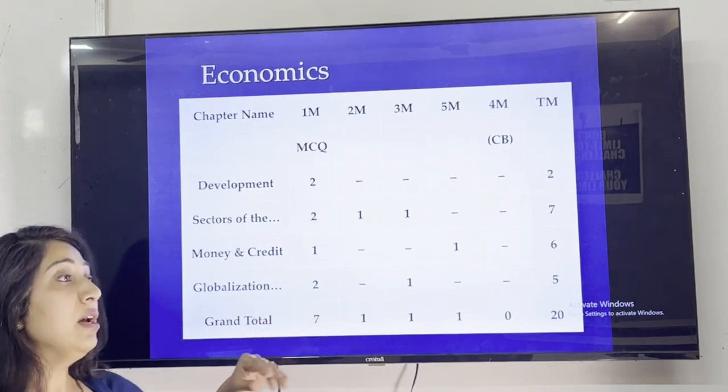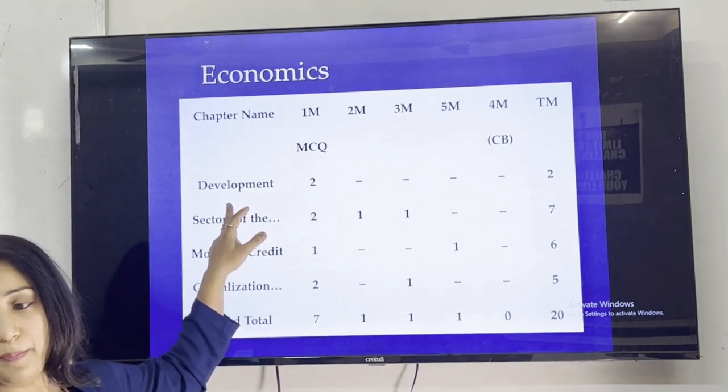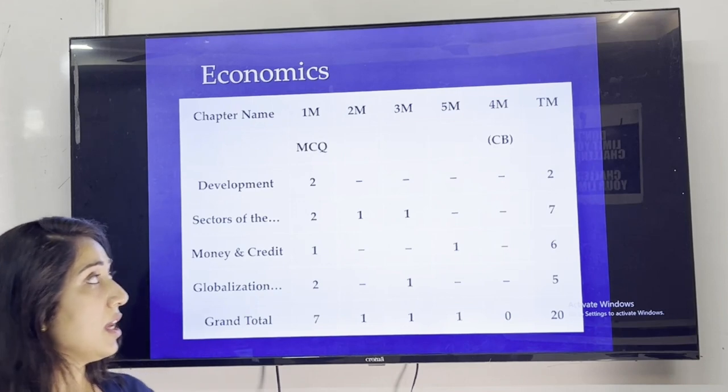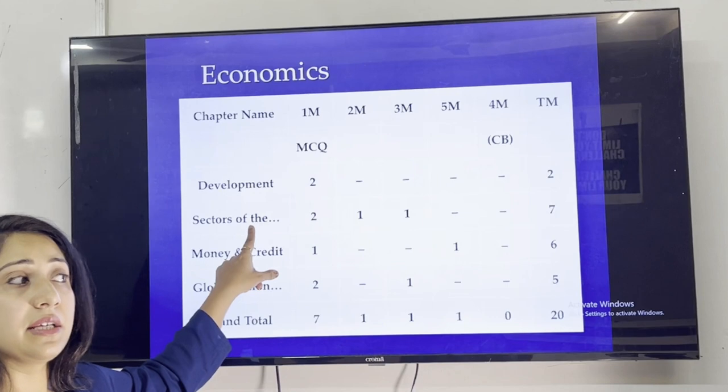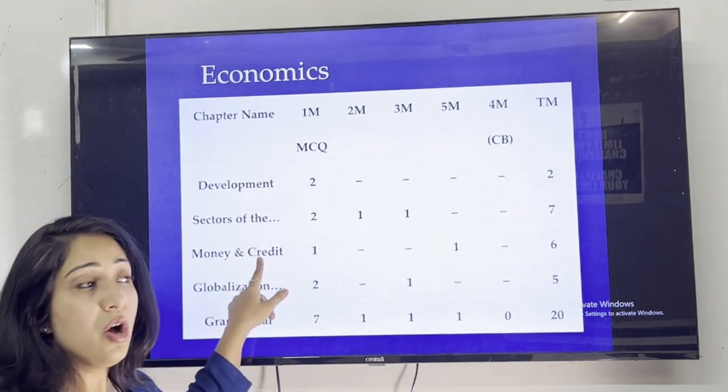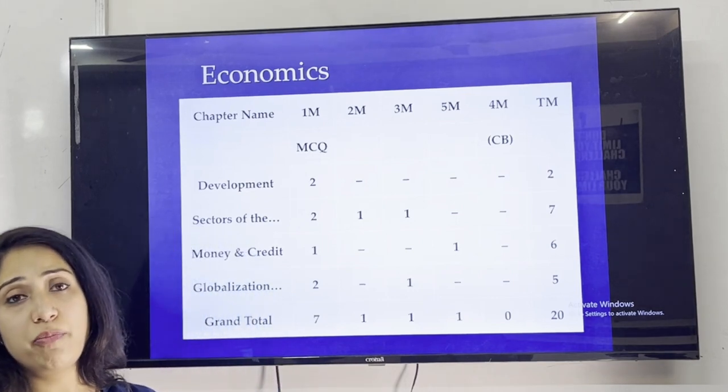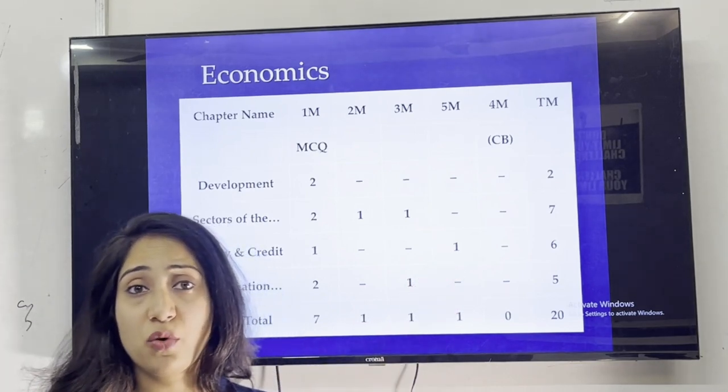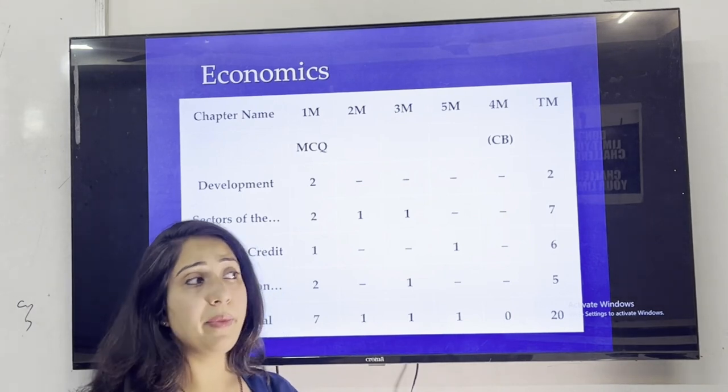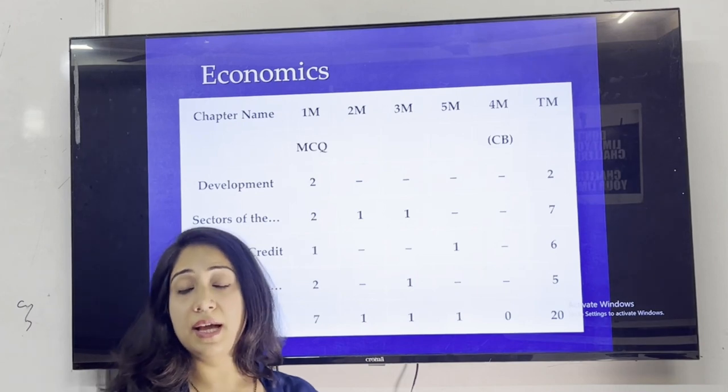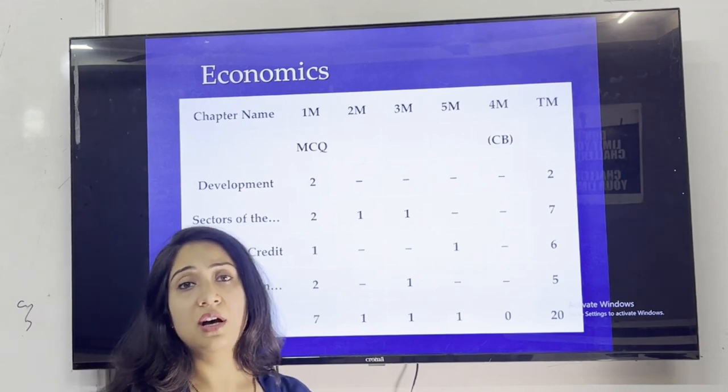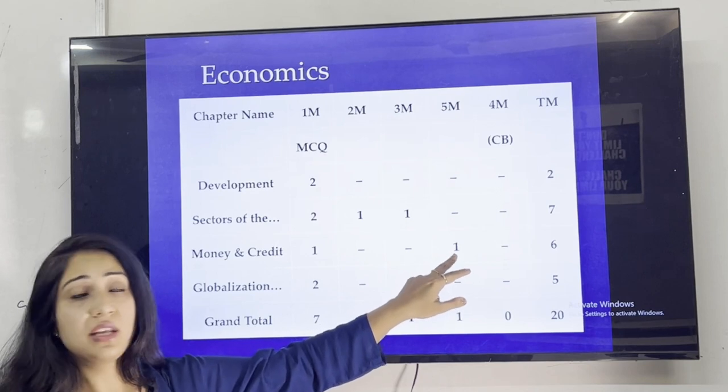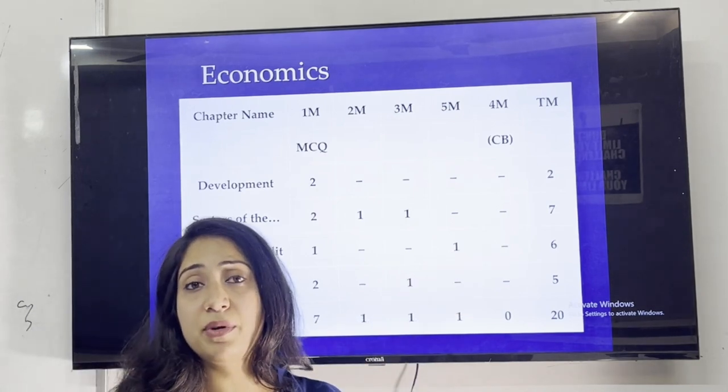Now if we look at economics's blueprint, you have 4 chapters: Development, Sectors, Money and Credit, and Globalization. If you look at CBSE blueprint, most weightage comes from sectors of Indian economy and money and credit. These are both easy chapters in terms of preparation. We will start with money and credit, which has 5 mark questions that are easy, like role of RBI, self-help groups, or importance of money. From money and credit, our chapter will complete in one shot.